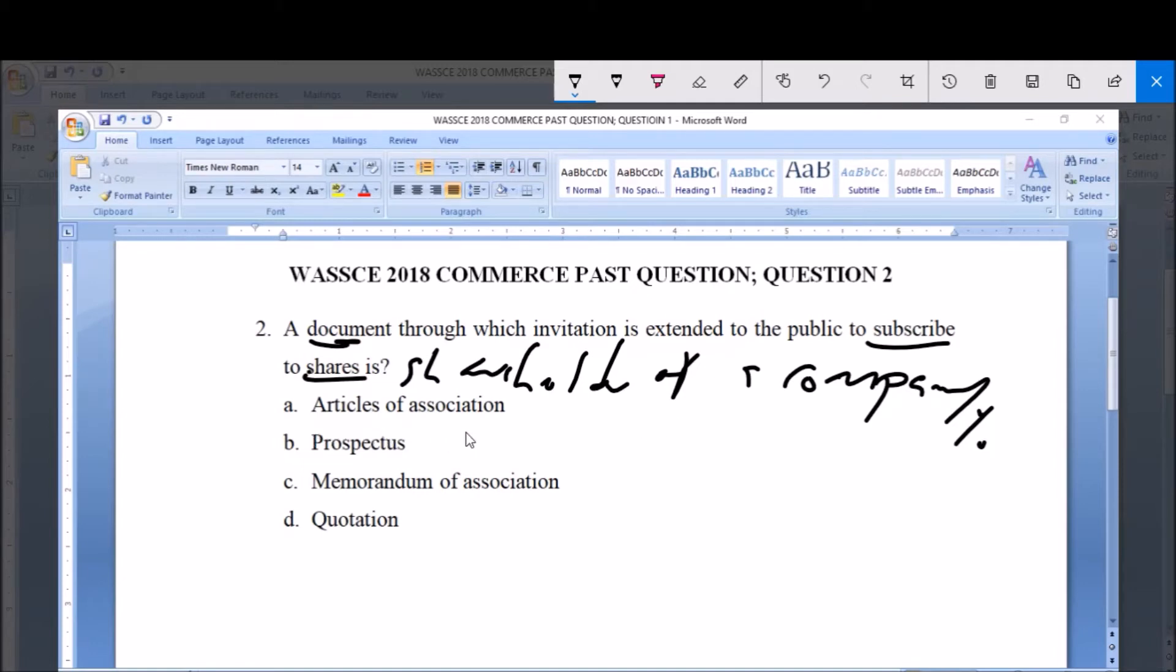Option A: articles of association. B: prospectus. C: memorandum of association. D: quotation. The correct option here is option B, prospectus. This document is what is issued out to a share buyer of a particular company.